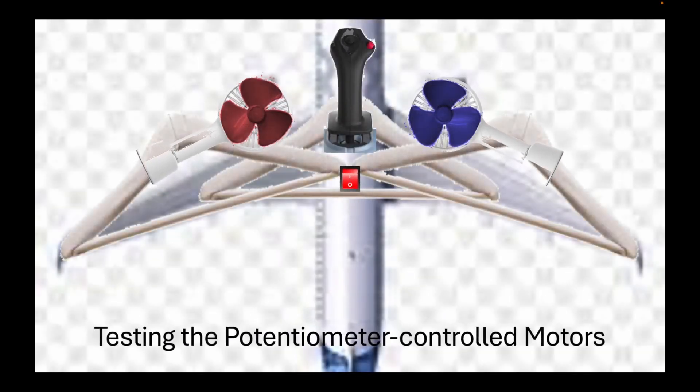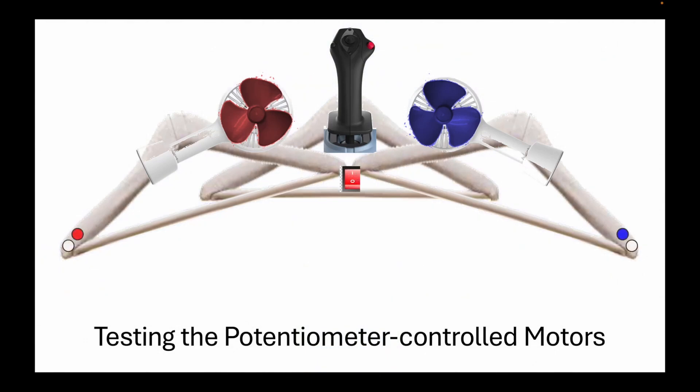We will now test the potentiometer-controlled motors. Once we've turned on the potentiometer-controlled motors, both propellers will spin at the same speed, while the lights at the wingtips will also illuminate.